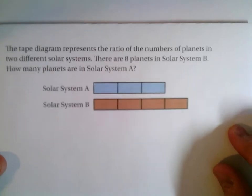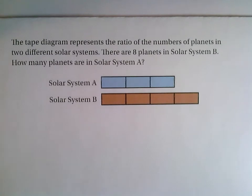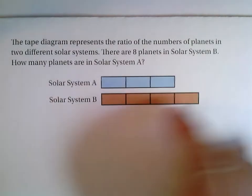So here's our next problem. This tape diagram represents the ratio of numbers of planets in two different solar systems. So we have solar system A and solar system B. There are eight planets in solar system B. How many planets are in solar system A?